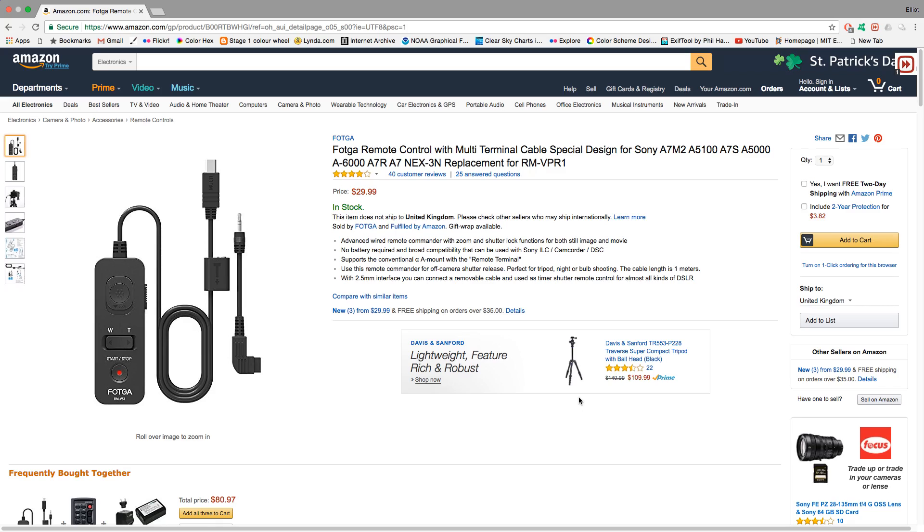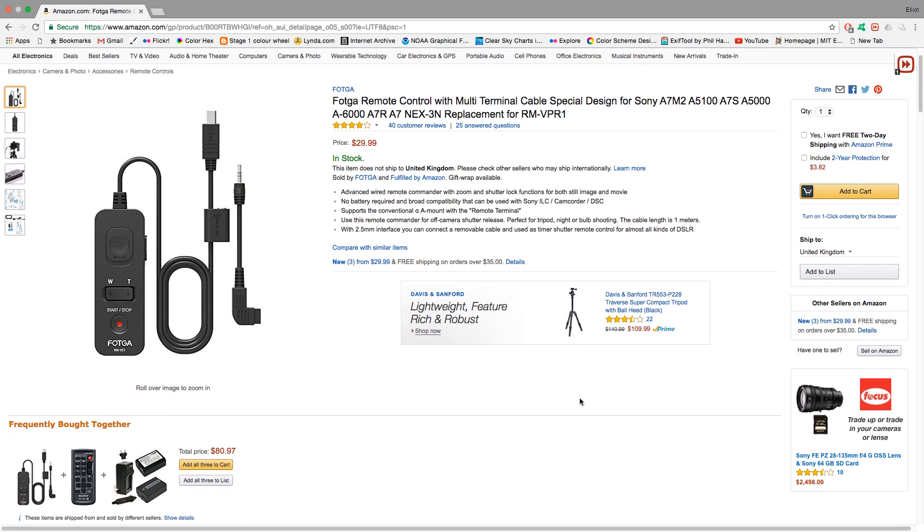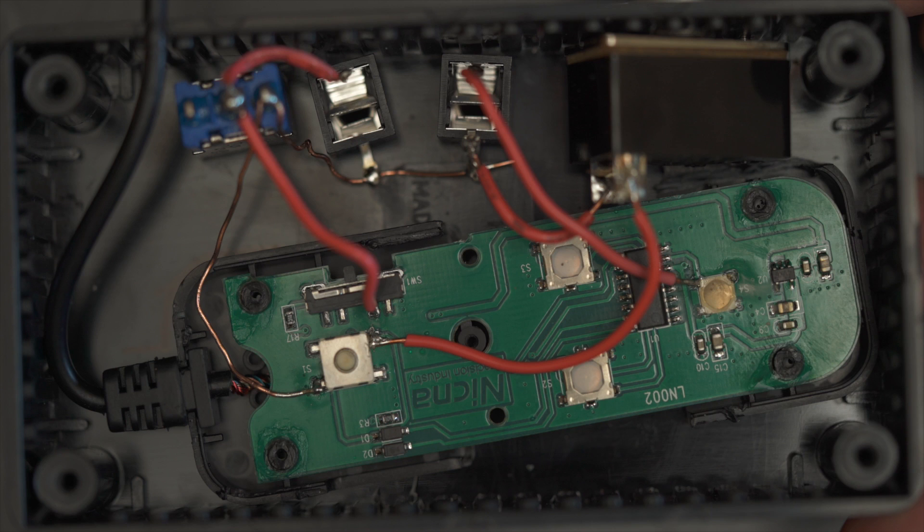This remote control in particular is quite expensive, I'll put a link to it in the description below, so I didn't really want to mess this up. And it's really quite useful for just normal tripod work, so I can start recording video without touching the camera. So I decided to experiment on a cheaper knockoff version that you can find on Amazon. So I bought the FOTGA version, but I bought it for around $30, and what was quite good about it was I opened it up and the circuitry was actually a little bit more easy to understand than in the Sony version.